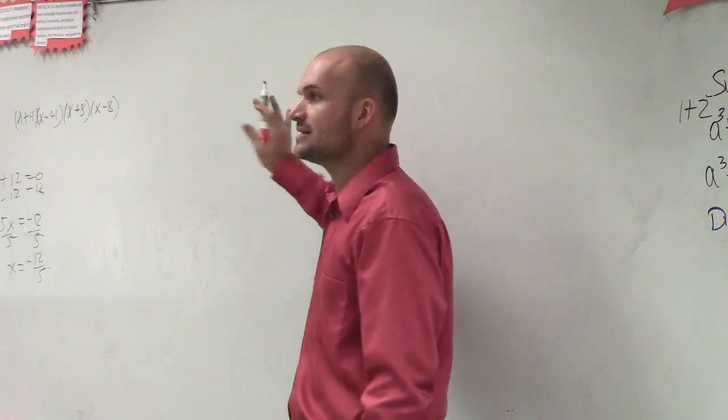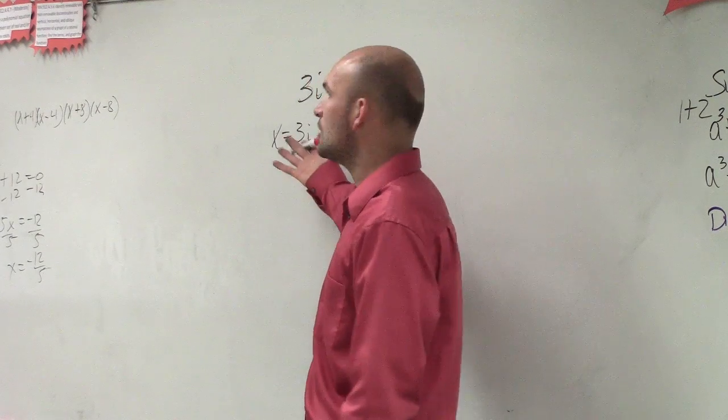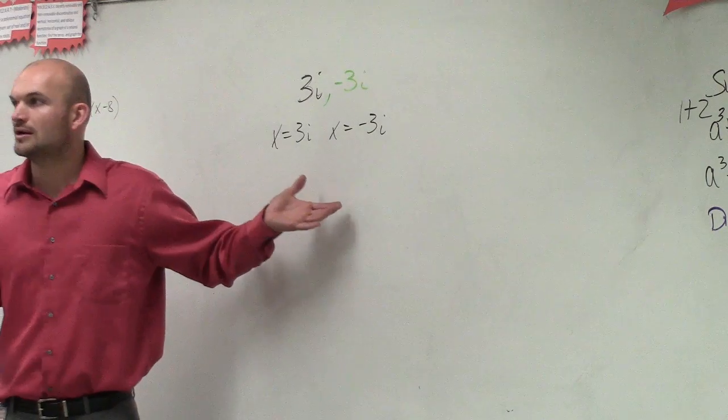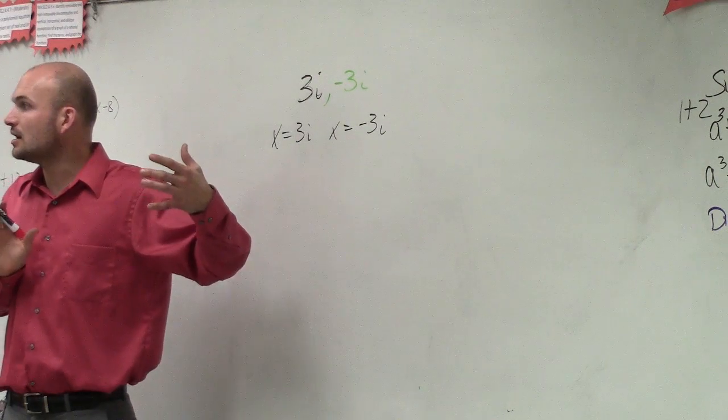So we can say for each one of these, let's set them equal to x. Well, then, how did we get to this point? Remember, before that, we had them equal to zero.